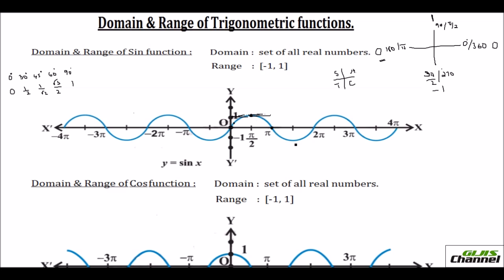From 180° to 270°, sine becomes negative — reaching minus 1 at 270°. In the third quadrant only tan is positive, so sine is negative there, which is why the graph goes below zero. At 360° it returns to 0. This full movement forms one complete circle, and the pattern repeats every 2π.